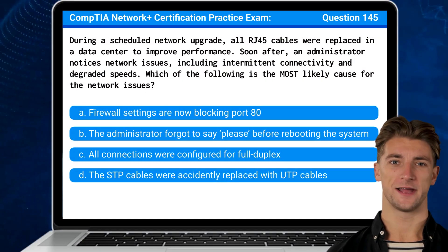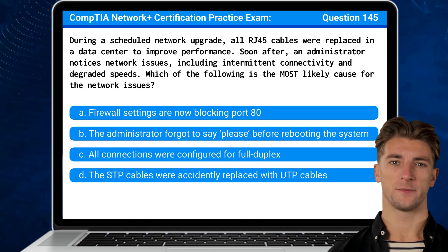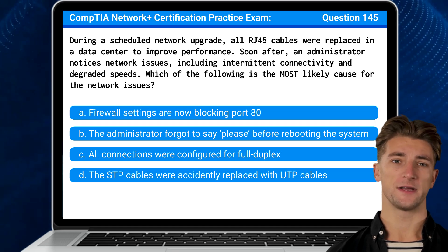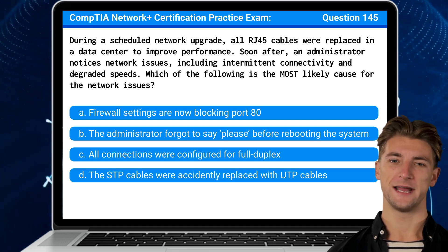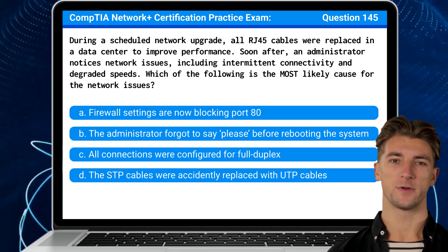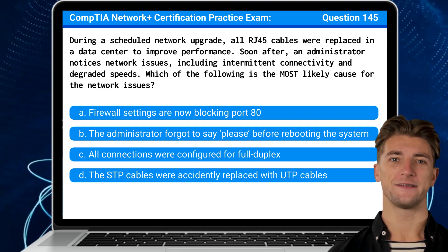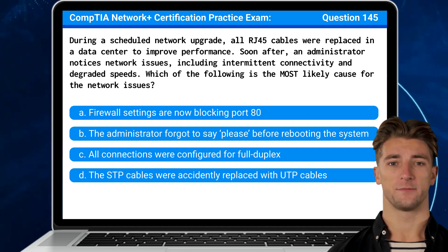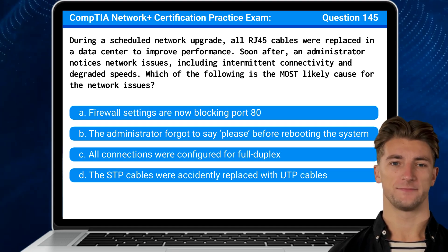Question 145: During a scheduled network upgrade, all RJ45 cables were replaced in a data center to improve performance. Soon after, an administrator notices network issues including intermittent connectivity and degraded speeds. Which of the following is the most likely cause for the network issues?